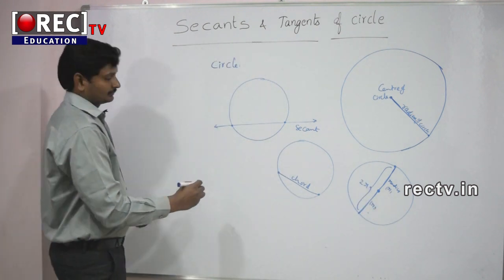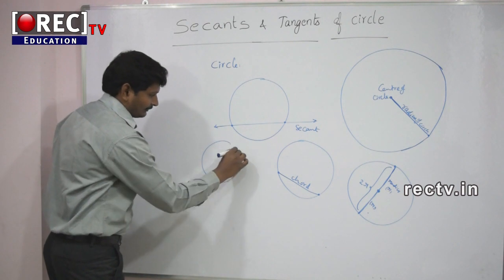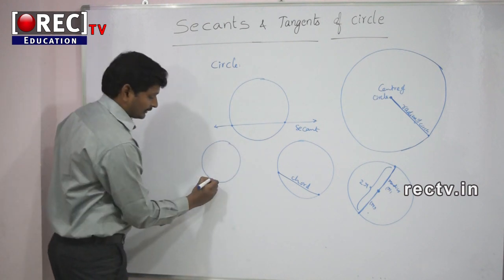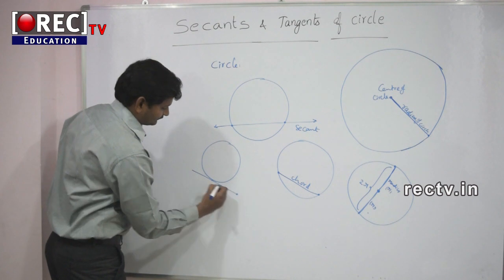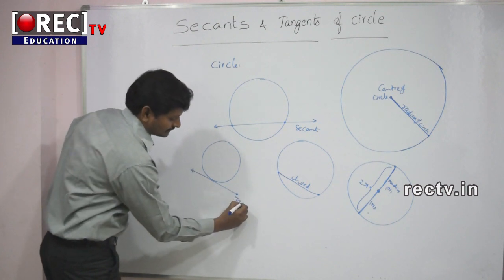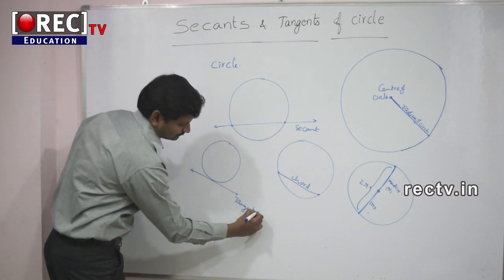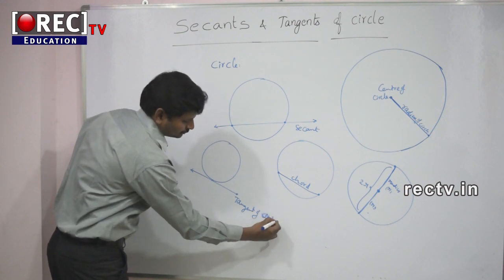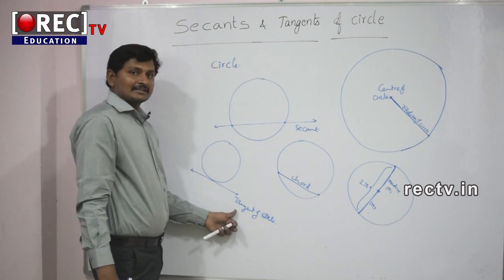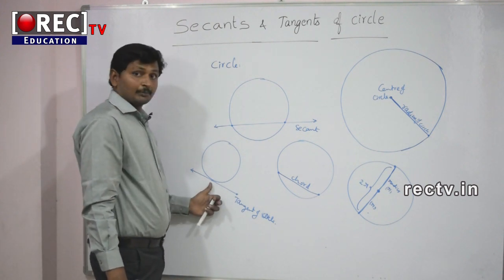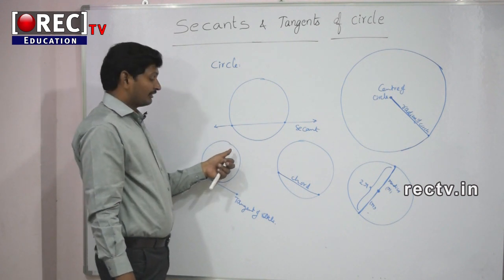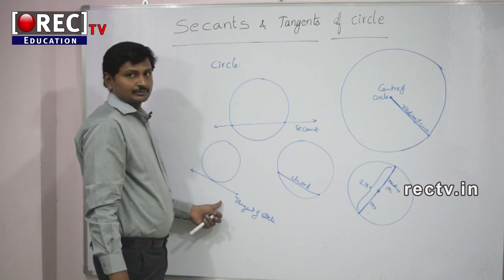Next, the straight line which touches the circle at one point is called a tangent. This is called the tangent of a circle. Tangent always touches the circle at one point only. For any circle, we can draw infinitely many tangents.